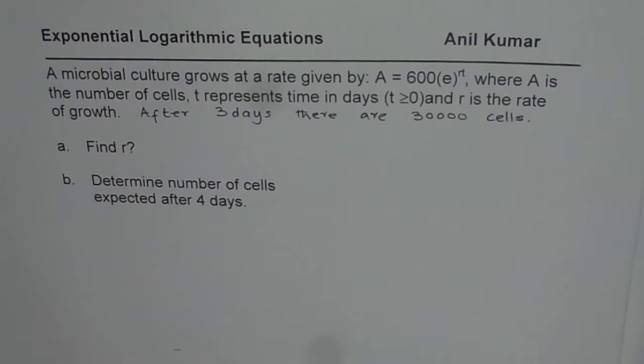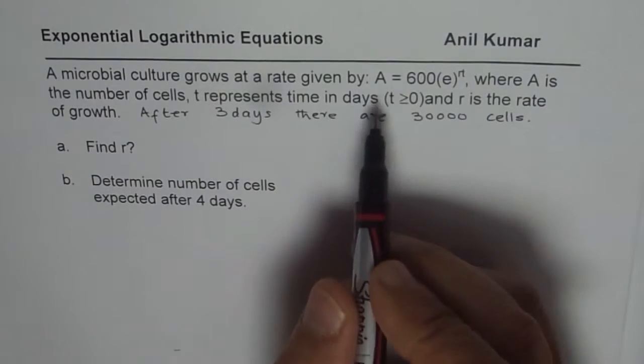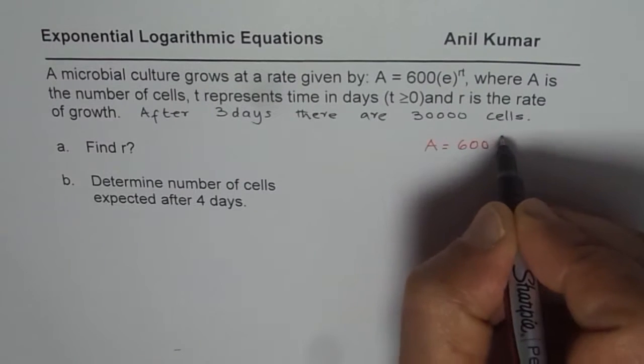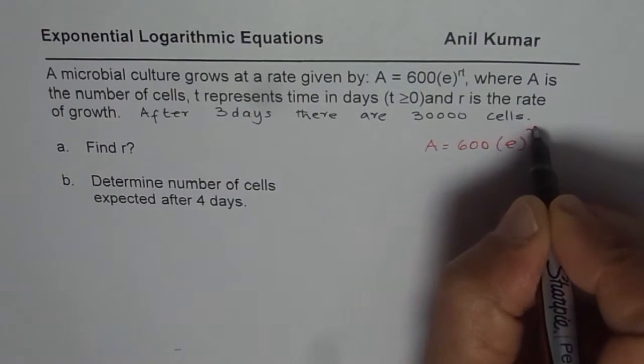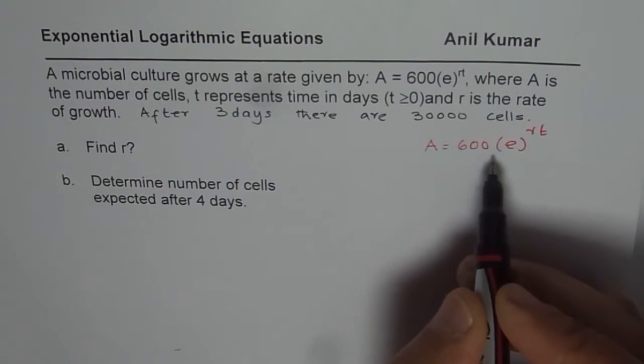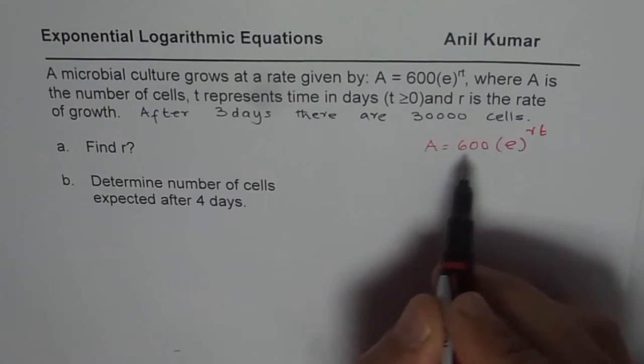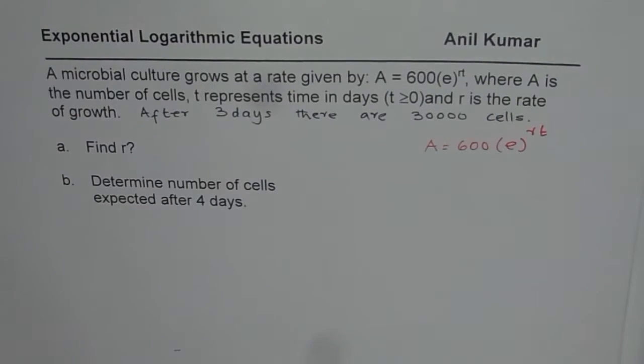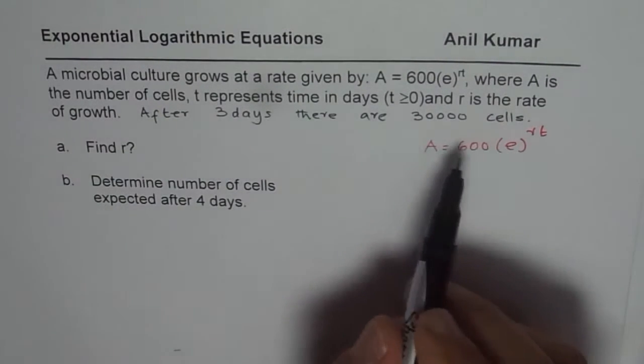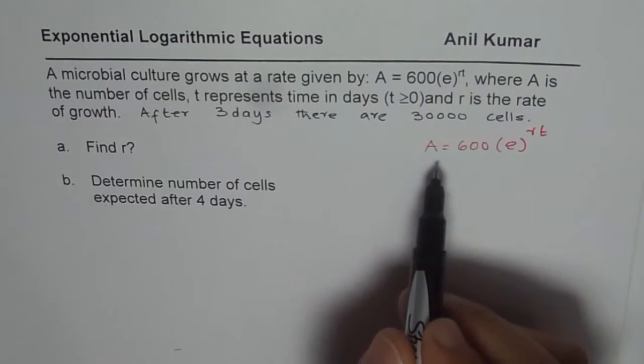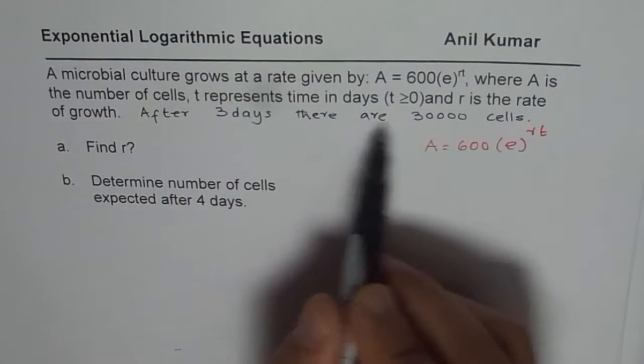The formula given to us is A equals 600 e to the power of rt. Now whenever there is something which happens continuously, then that is the growth rate formula. You can make a note of this formula. We can substitute the value of t as 3, so after three days there are 30,000 cells, and then find r.